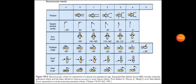For popliteal angle: 180 degrees — completely straight — carries negative one point. One hundred sixty degrees carries zero points. One hundred forty degrees carries one point. One hundred twenty degrees carries two points. One hundred degrees carries three points. Ninety degrees carries four or five points.